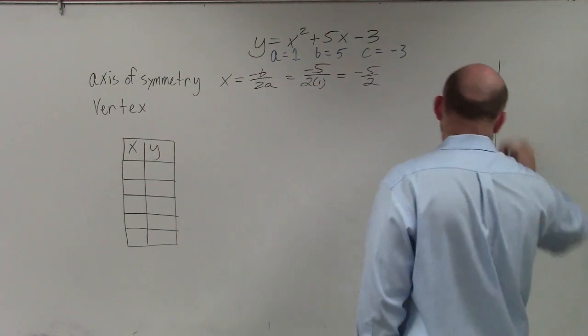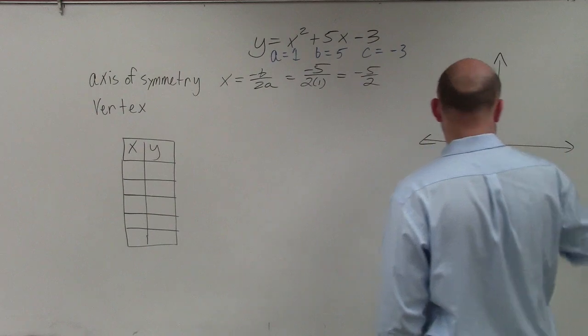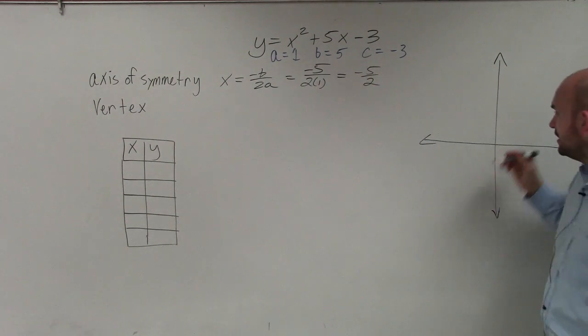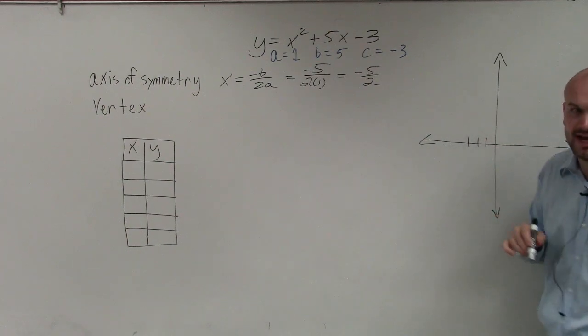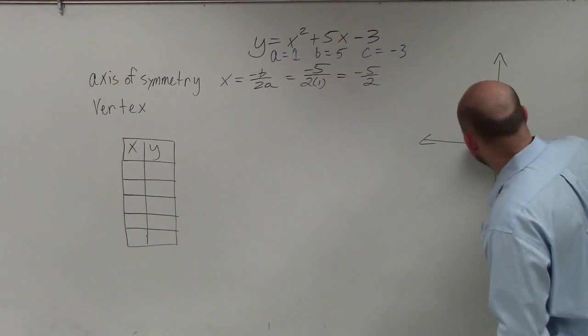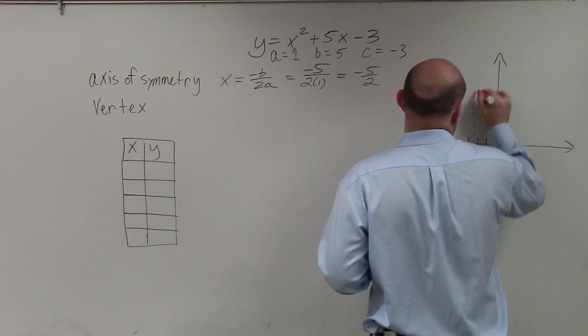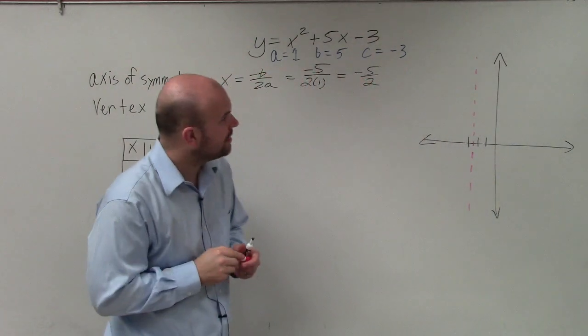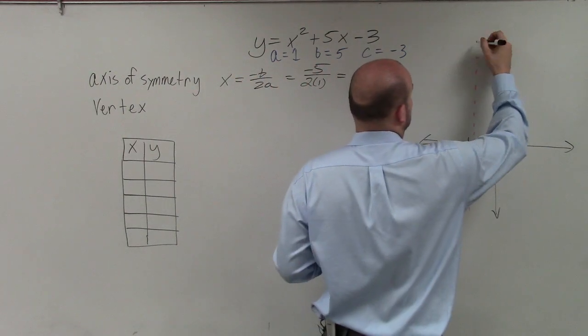So if you're asked to graph this, the best thing I'd probably say when graphing is, yeah, kind of think of it as a decimal. Convert your fraction to a decimal. And then you could say negative 2.5. Well, there's negative 2, and there's negative 3. Negative 2.5 is between negative 2 and negative 3. So therefore, I'm going to make a nice dashed line at x equals negative 5 halves. And that is going to be my axis of symmetry.